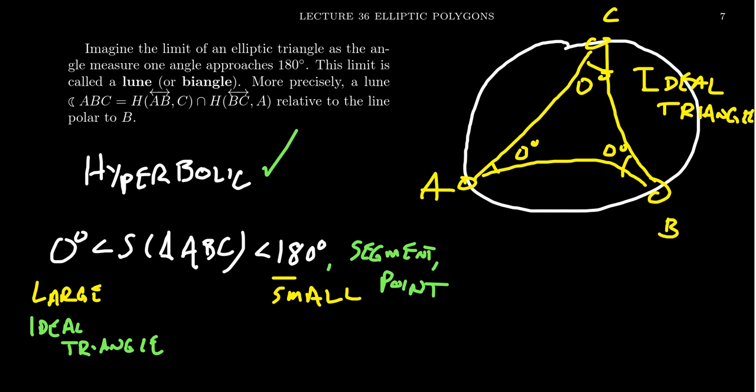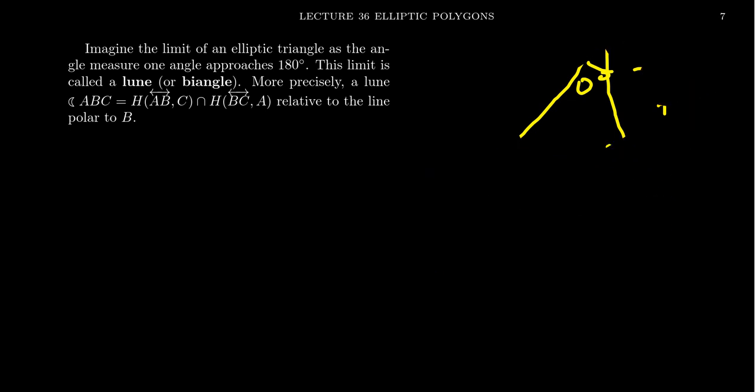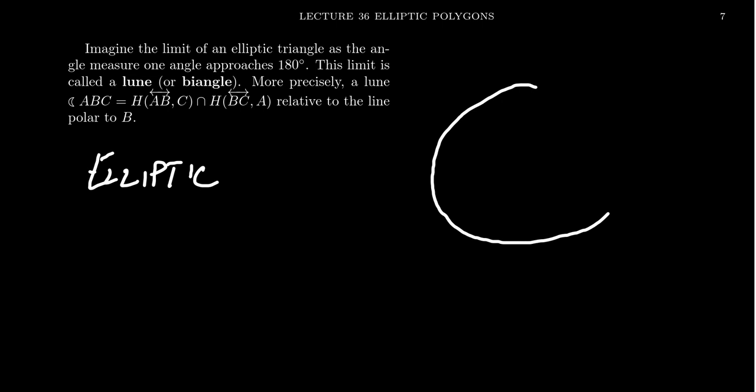What about elliptic geometry? The same things happen here. So think of what happens as we push to the limits in elliptic geometry as well. For the sake of drawing, we'll think of this as the spherical model, although analogous things could happen in the projective model of hyperbolic geometry. Imagine we have a triangle, and for ease of drawing, we'll make it into a double right triangle.